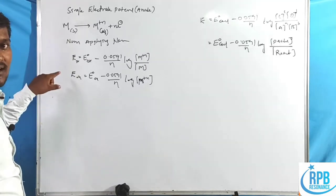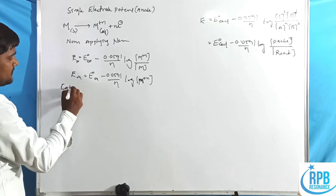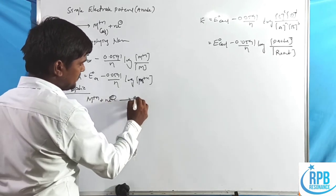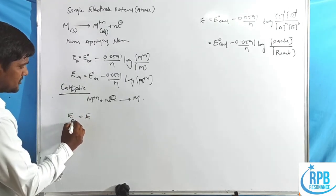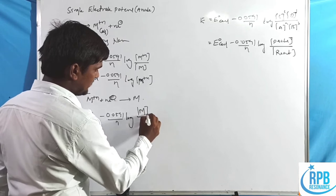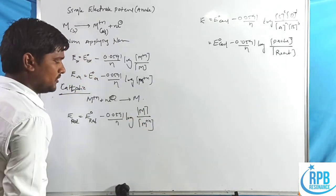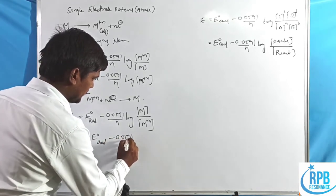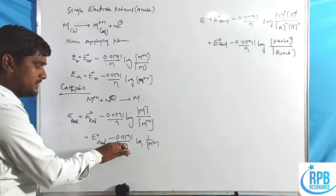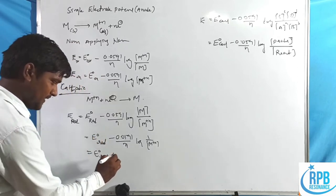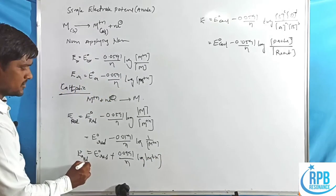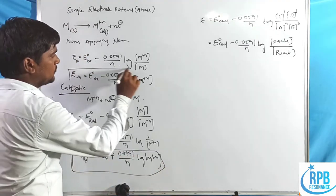For the cathodic reaction, metal cations gain electrons to form the metal (M^n+ + ne⁻ → M). Applying the Nernst equation: E_reduction = E°_reduction − (0.0591/n)·log(1/[M^n+]). Since the denominator becomes numerator, the sign changes: E_reduction = E°_reduction + (0.0591/n)·log[M^n+].